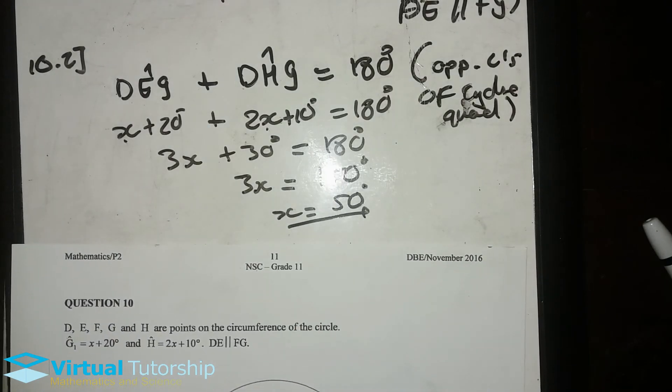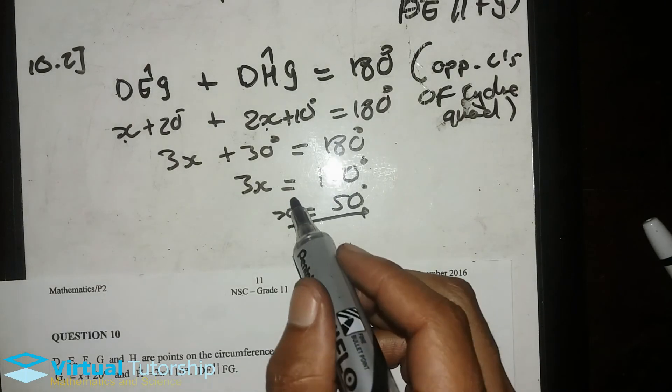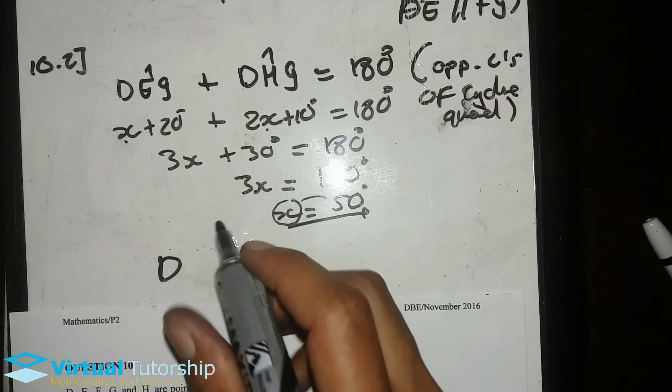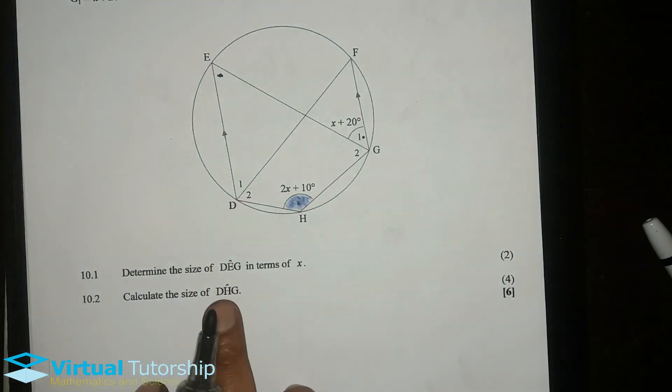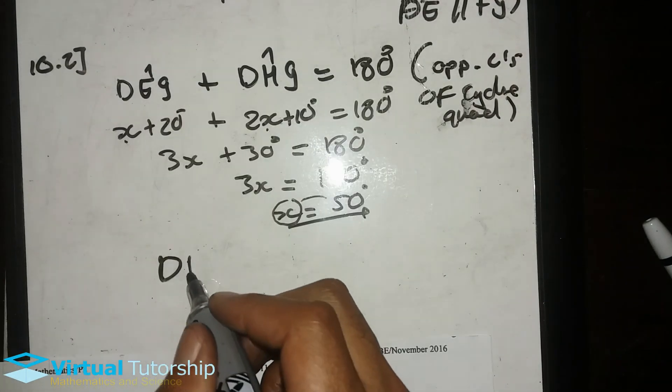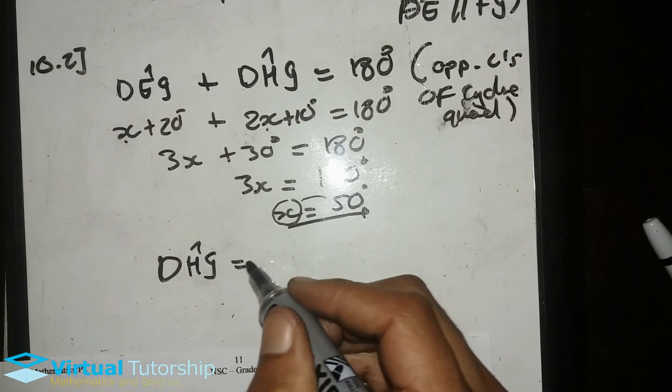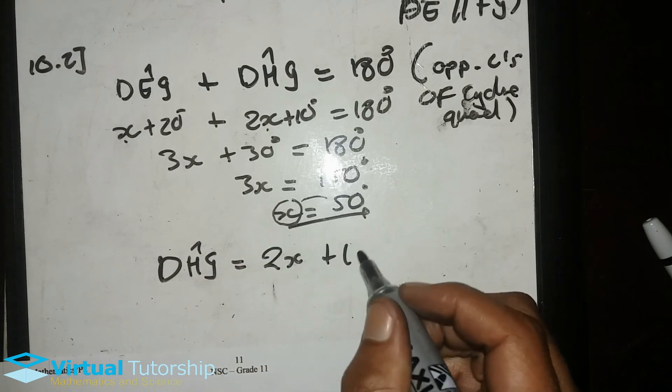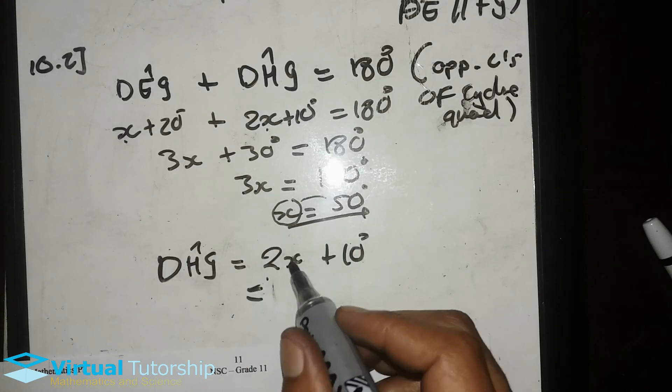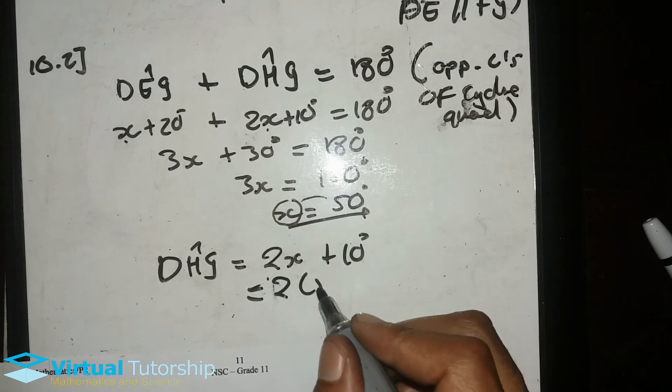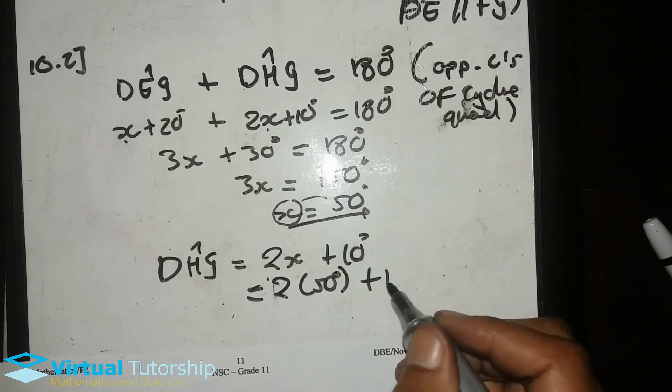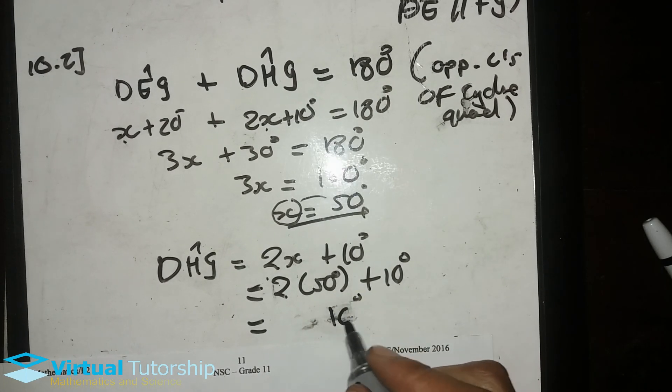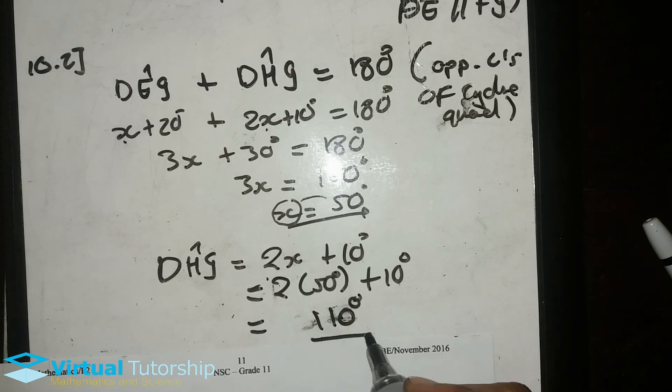Final answer. But, hang on. Let's calculate. So when X is calculated. DHG, which is equal to, in terms of X, 2X plus 10 degrees. So when we substitute the X value, which is 50, 2 times 50 plus 10 degrees, is equal to 110 degrees.